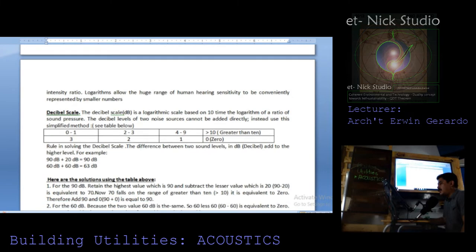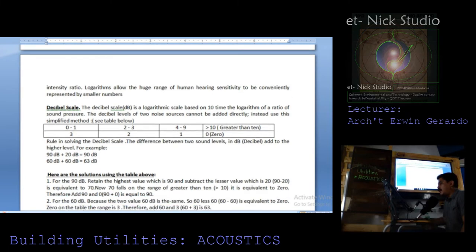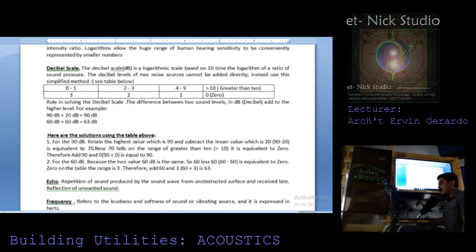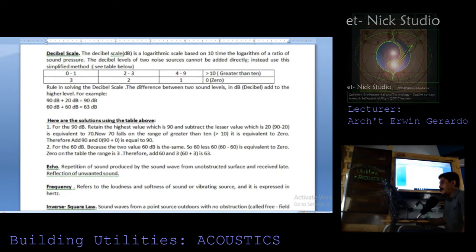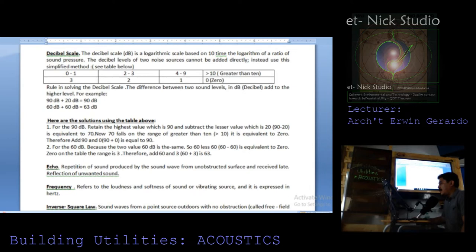Logarithms allow the huge range of human hearing sensitivity to be conveniently represented by smaller numbers. The decibel scale, abbreviated dB, is a logarithmic scale based on 10 times the logarithm of a ratio of sound pressure.